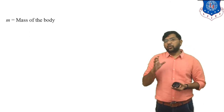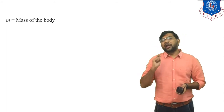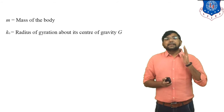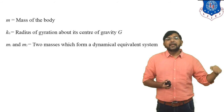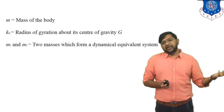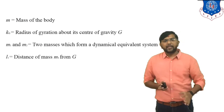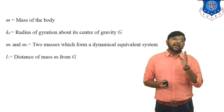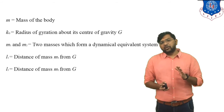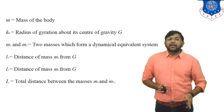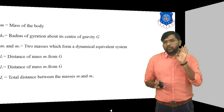First, some basic terminology: small m indicates the mass of the body; small kg indicates the radius of gyration about its center of gravity; small m1 and m2 indicate the two masses forming the dynamically equivalent system; small L1 indicates the distance of mass m1 from capital G; small L2 indicates the distance of mass m2 from capital G; and capital L indicates the total distance between masses m1 and m2.